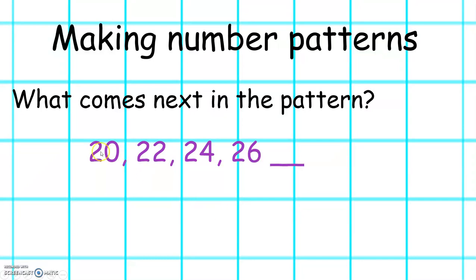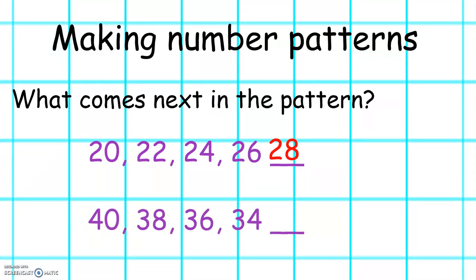Now these number patterns are a little bit tricky because we're counting in twos. We've got 20, 22, 24, 26. Can you think what number will be next? Count on two from 26. And the answer is 28. Let's look at this one — this one is counting backwards in twos. We've got 40, 38, 36, 34. What number do you think will come next? Count back two from 34. And the answer is 32.